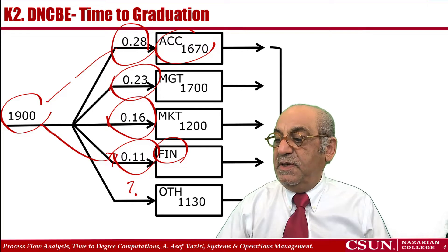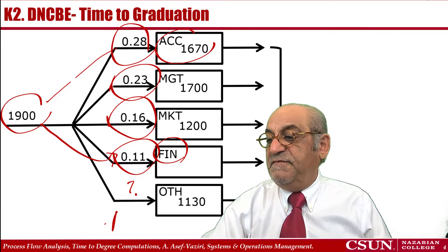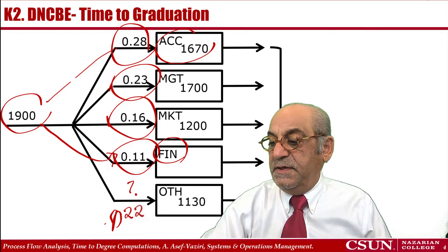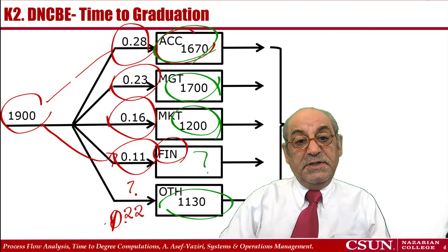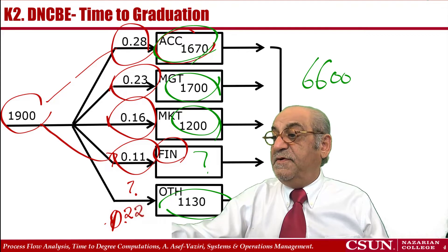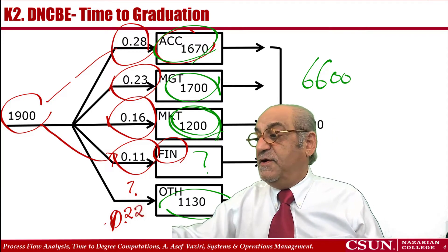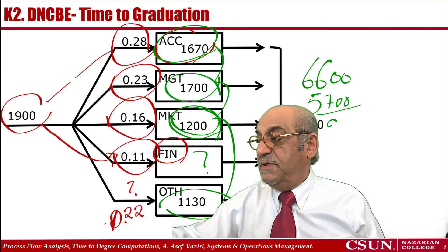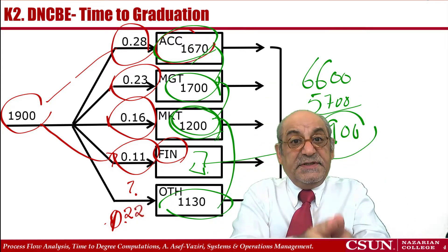Computing the missing percentage is quite simple — the summation should come out to 1. 28 plus 23 is 51, plus 11 is 62, plus 10 is 72, plus 6 is 78. Therefore, 22% is the remaining department. I also have the headcounts of each department except Finance. But I know the total headcount is 6,600. So 1,130 plus 1,670 is 2,800; adding the others gives 5,700 for those four departments, so 900 is the headcount of Finance.